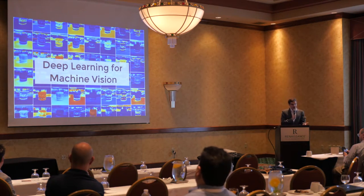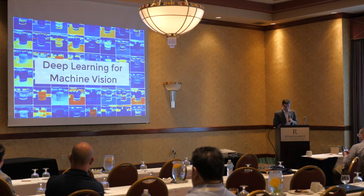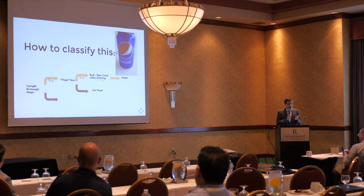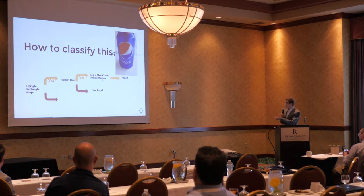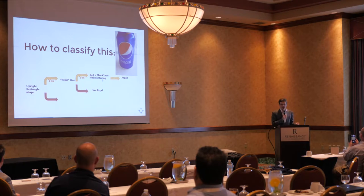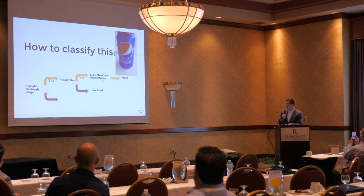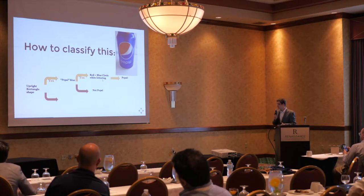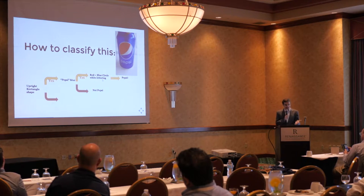To jump into the first part — deep learning for machine vision — if you're given an image of a Pepsi can, we can all recognize it. We can read 'Pepsi' and recognize the logo. But how would you tell a computer that this is a Pepsi can? You might think: let's make a decision tree. Look for something shaped like an upright rectangle — a can shape. Then check if it's blue. And just in case there's another blue can, also look for the distinct Pepsi logo. If all those conditions are met, it's probably a Pepsi can.